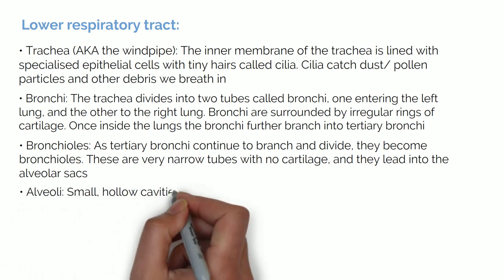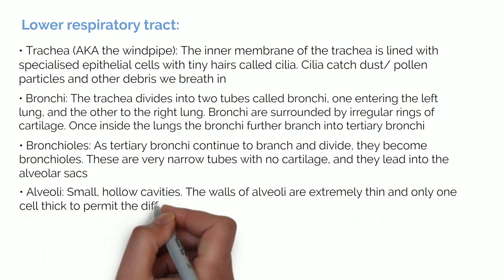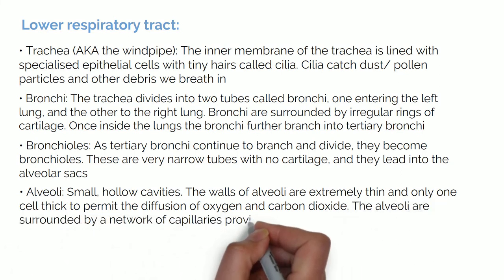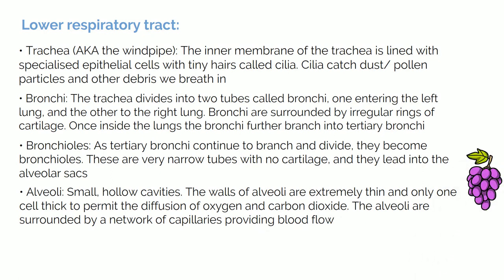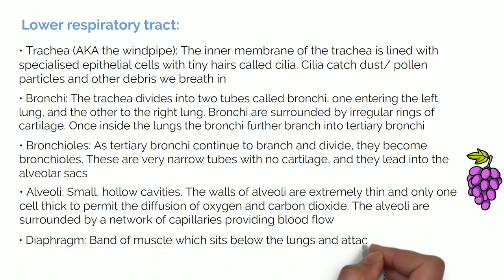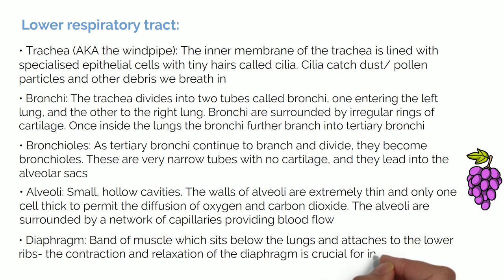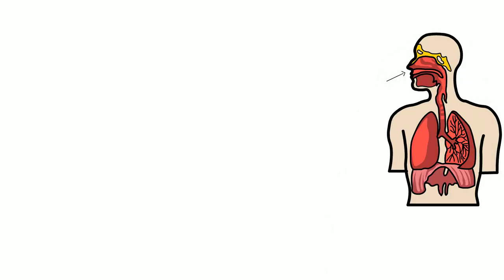Alveoli are small hollow cavities, often described as having the shape of a bunch of grapes. The walls of the alveoli are extremely thin and only one cell thick, to permit the diffusion of oxygen and carbon dioxide. The alveoli are surrounded by a network of capillaries providing blood flow. The diaphragm is a band of muscle which sits below the lungs and is attached to the lower ribs; its contraction and relaxation is crucial for inhalation and exhalation. Air enters through the nose and mouth, passes down through the trachea, bronchi and bronchioles into the alveoli.